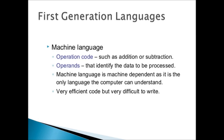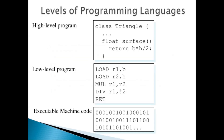Let's discuss each type. First, machine level language, also known as the first generation computer language — it was used to program first generation computers. As you can see in the figure, machine level language uses only zeros and ones, so it is also known as binary language. It is also known as the mother language of the computer because it is directly understandable to the computer. These are machine codes which are executable by the computer.